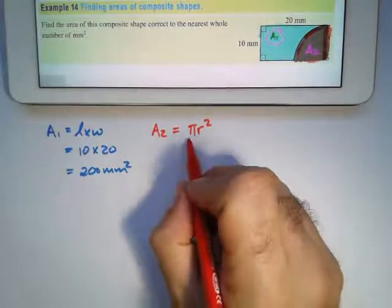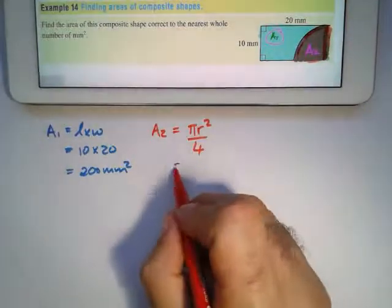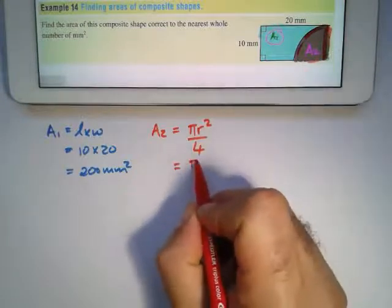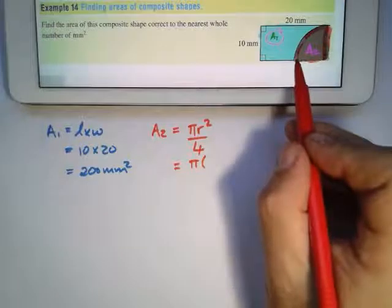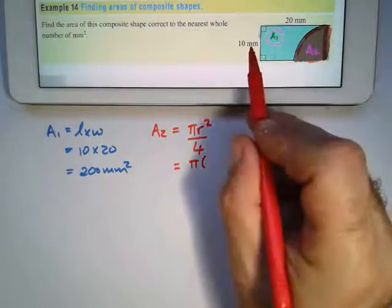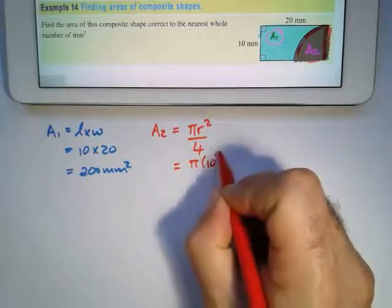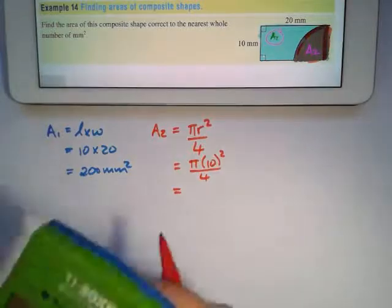But that is just the quarter, so divide by four. I just have to get my values correct. π as π, my radius is 10 millimeters, so this will be 10 squared divide by four. On my calculator I'm going to do that.